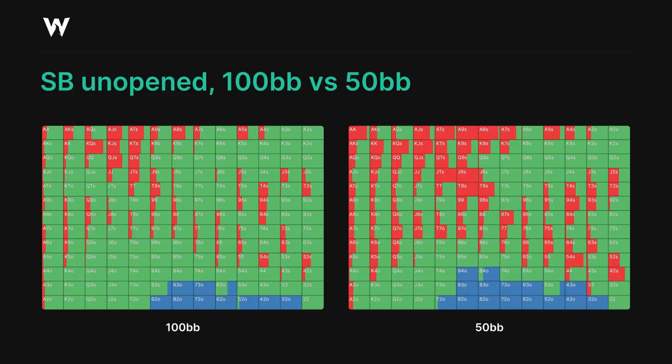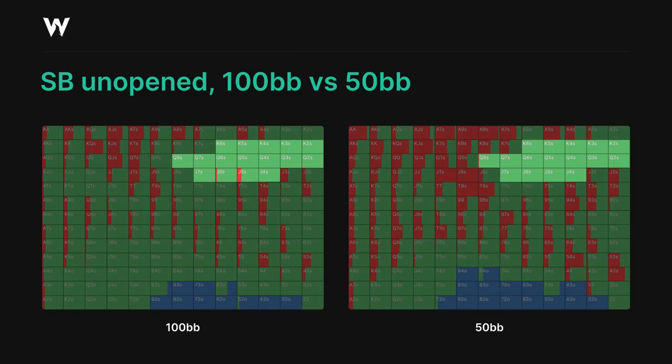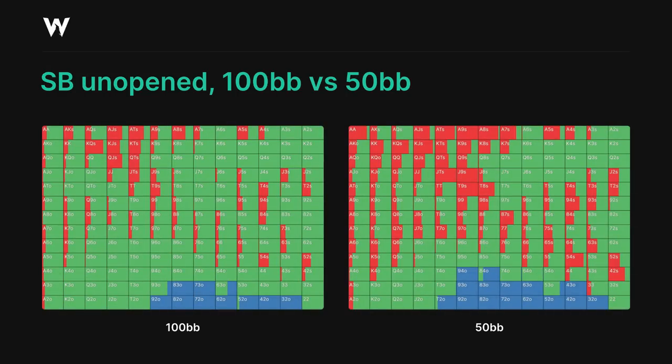Our limping range has stayed relatively consistent in terms of its construction, with two specific categories of hands now essentially playing pure limp: the suited high cards, such as king-deuce suited through king-six suited, queen-deuce suited through queen-eight suited, and jack-four suited through jack-seven suited. This speaks to our desire to have hands in our limping range which can realize equity quite efficiently, even if they're not strong enough to raise and get called by worse. We're also pure limping the weakest offsuit hands just above our folding range.